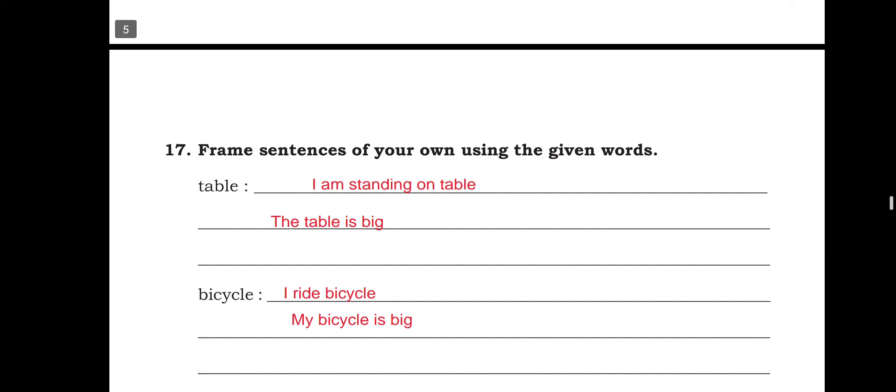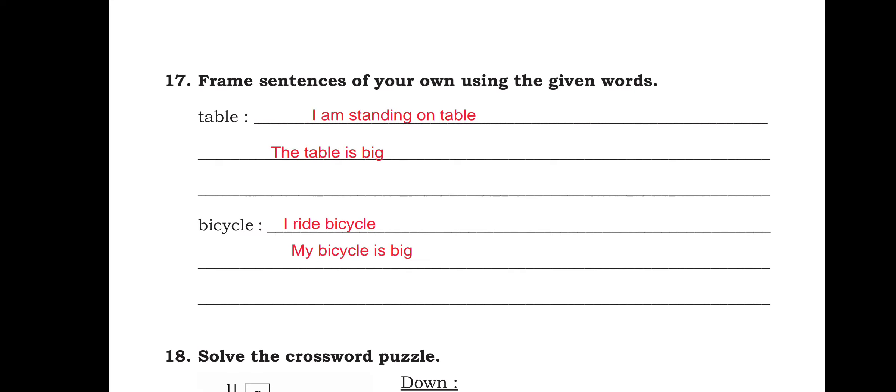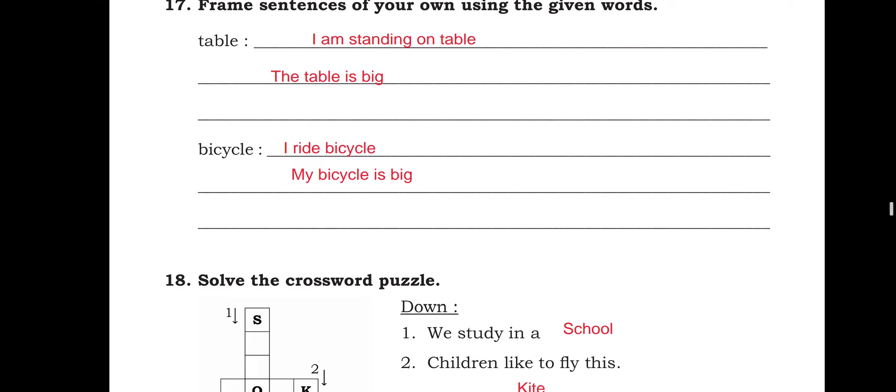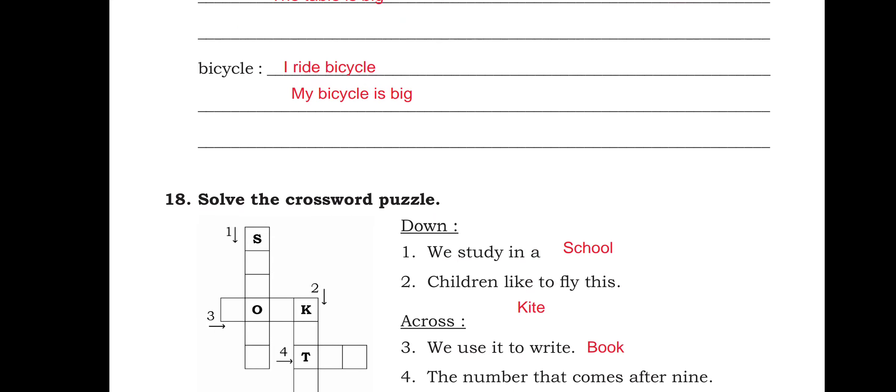Frame sentences of your own using the given words. Table. I am standing on the table. The table is big. Bicycle. I ride bicycle. My bicycle is big.